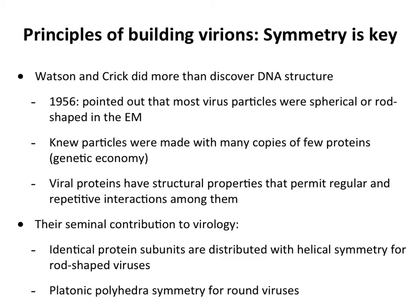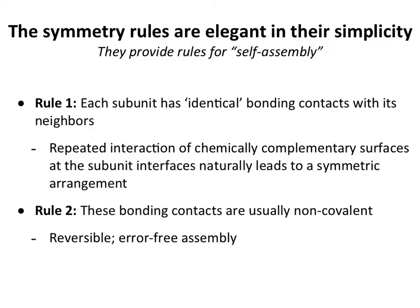That's what Watson and Crick gave to structural virology. From their work came these rules of symmetry, which tell you how to make a virus particle, and there are just two rules. The first rule is that each subunit in the particle has identical bonding with its neighbors. So if you have the same protein repeated, the interactions of those two proteins will be the same no matter where you are in the virus particle — identical bonding — giving you a symmetrical arrangement of proteins in the capsid.